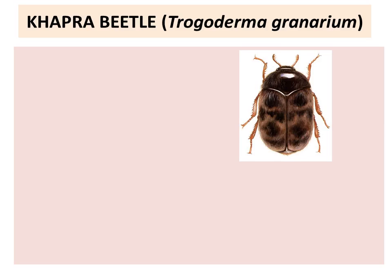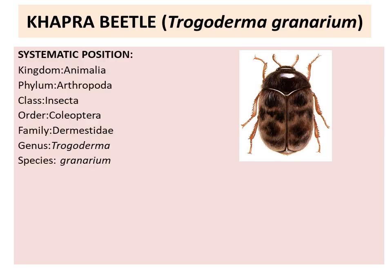The first pest is Trogoderma granarium. Coming to the classification of Trogoderma granarium: it belongs to Kingdom Animalia, Phylum Arthropoda, Class Insecta, Order Coleoptera, and Family Dermestidae. Genus is Trogoderma and species is granarium.